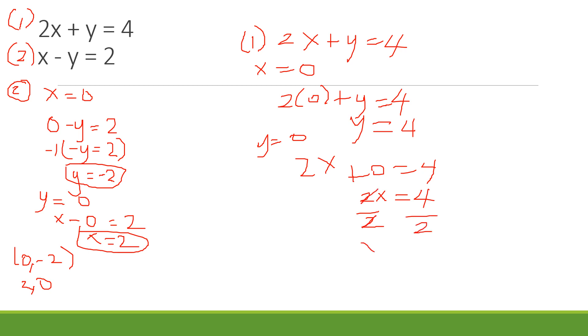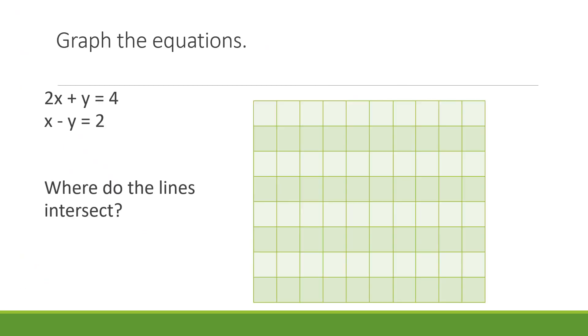If y equals zero, we get 2x plus zero equals 4. So 2x equals 4, and x equals 4 divided by 2, which is x equals 2. We got our solutions here. We have (0, 4) and (2, 0). On the next, we are going to graph this one.